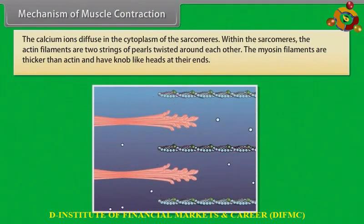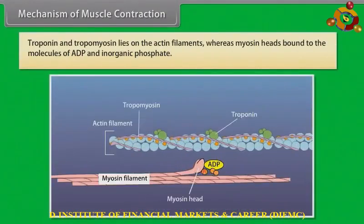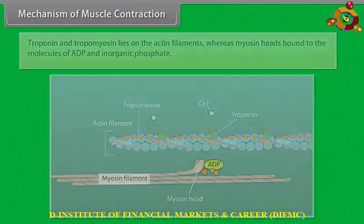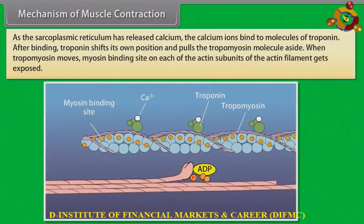Within the sarcomeres, the actin filaments are two strings of pearls twisted around each other. The myosin filaments are thicker than the actin and have knob-like heads at their ends. Troponin and tropomyosin lie on the actin filaments, whereas myosin heads are bound to molecules of ADP and inorganic phosphate. As the sarcoplasmic reticulum releases calcium, the calcium ions bind to the molecules of troponin. After binding, troponin shifts its own position and pulls the tropomyosin molecule aside.